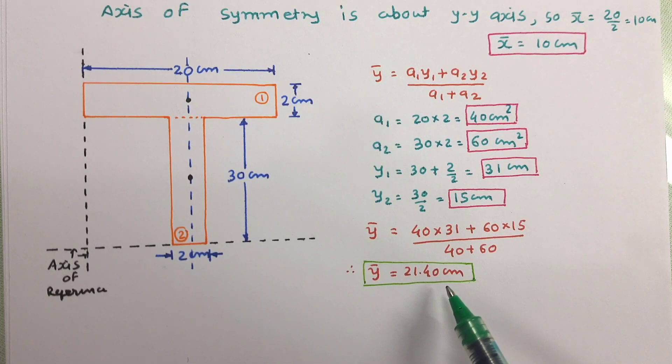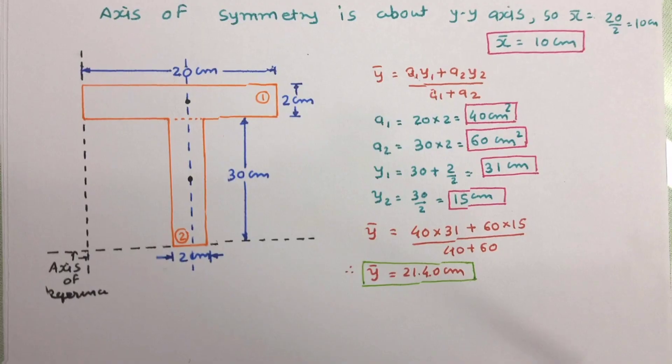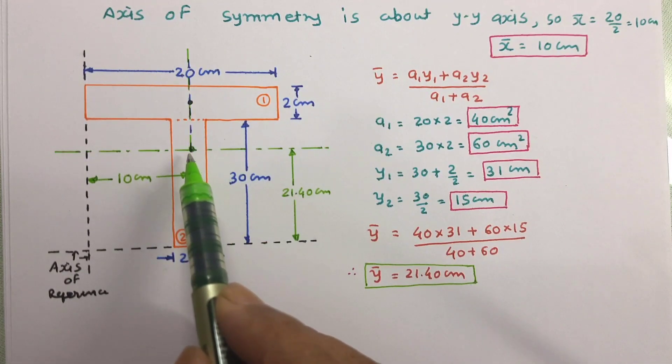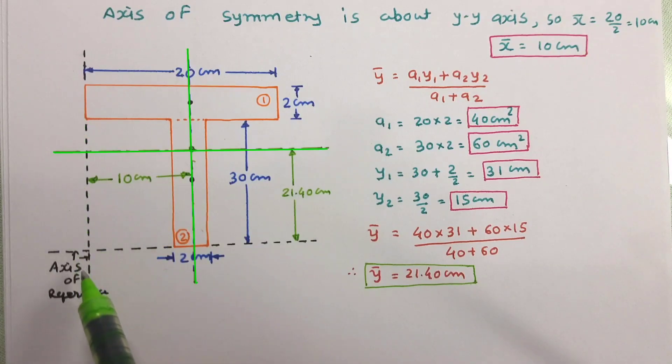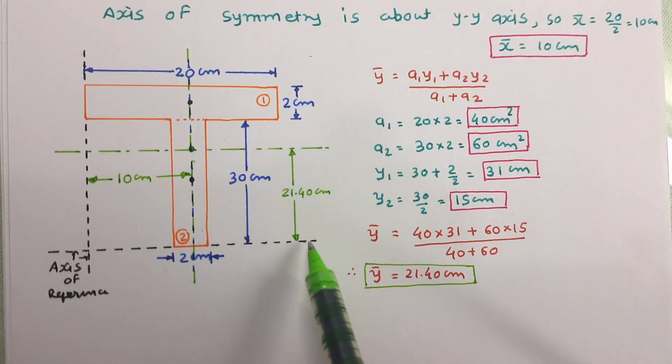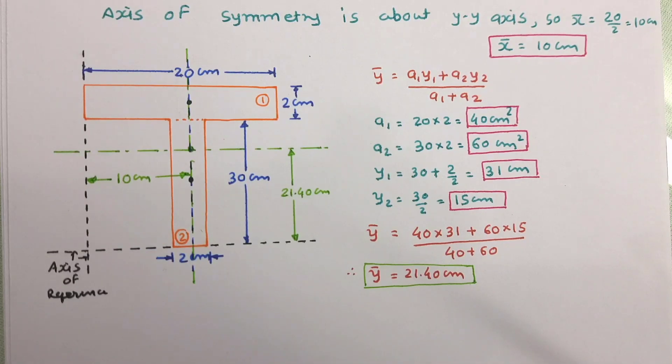Now let us mark x bar and y bar, means the center of gravity of t section in the figure. So this point is the centroid of figure which is at 10 cm from reference y axis and 21.4 cm from reference x axis. So this way we can solve such problems.